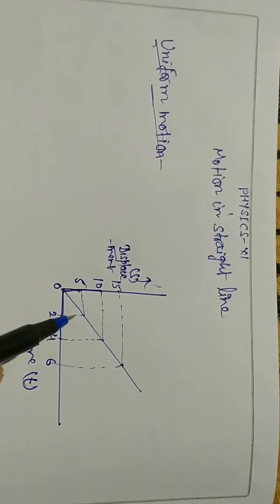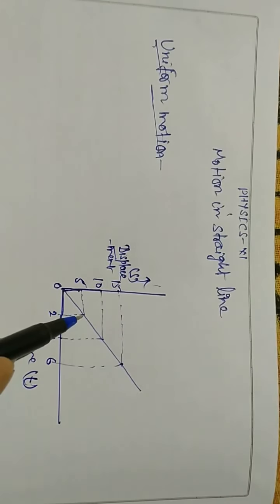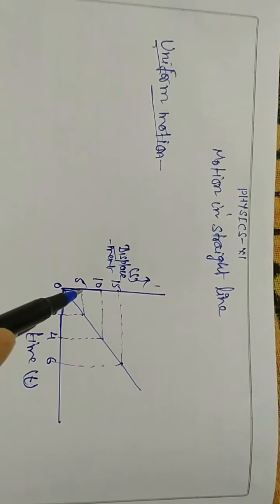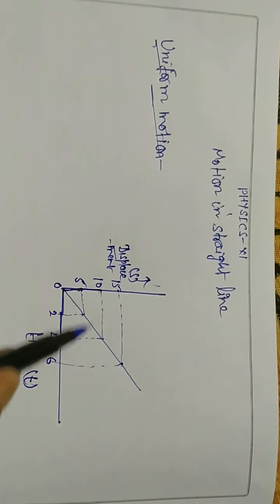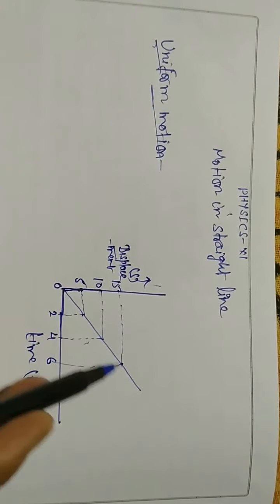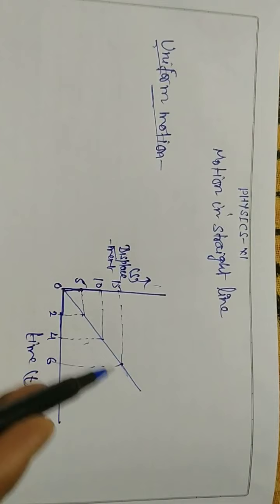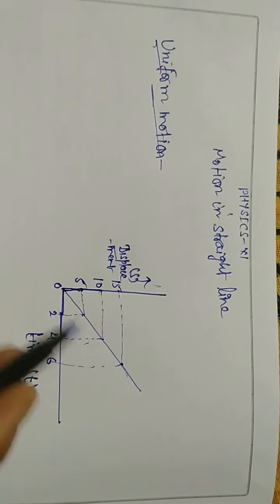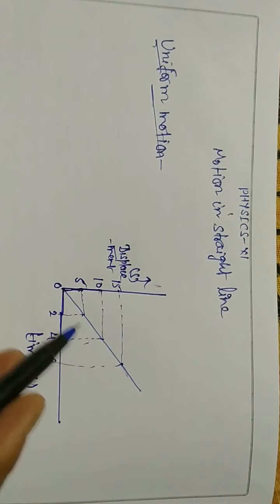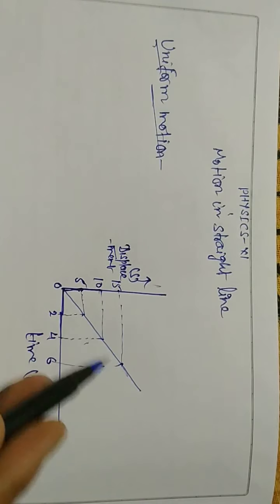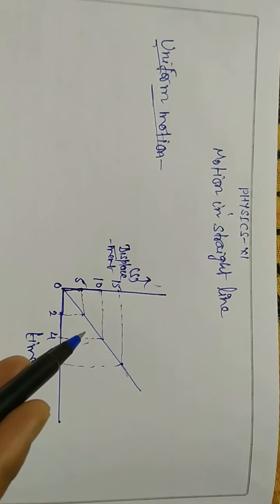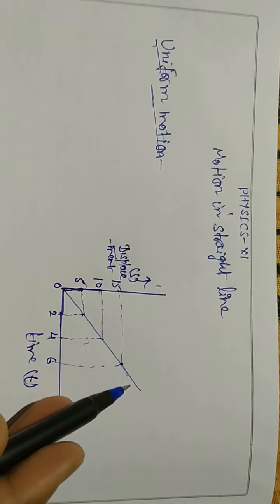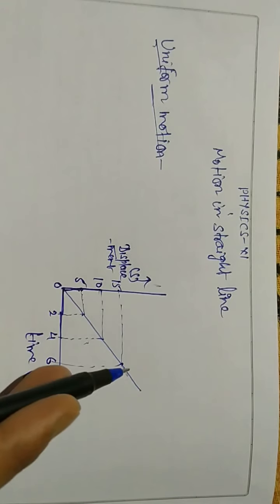If an object covers 5 meters in each 2-second interval, the motion is in a straight line and the graph will be a straight line. This motion is known as uniform motion.